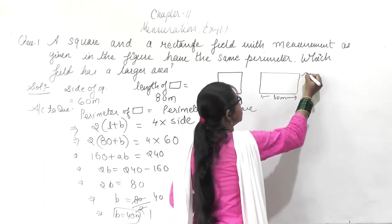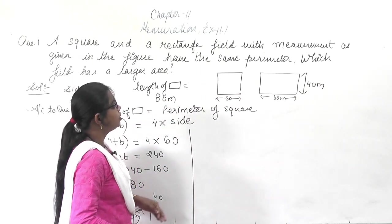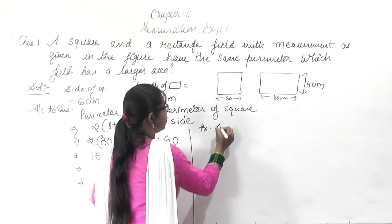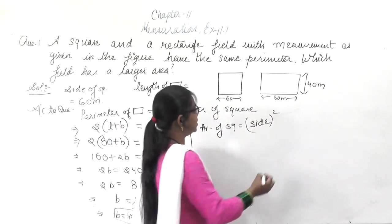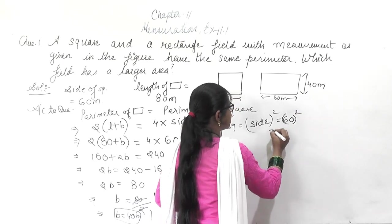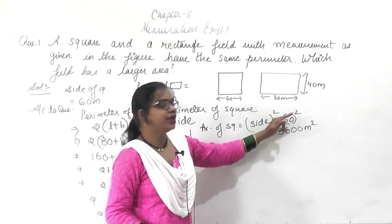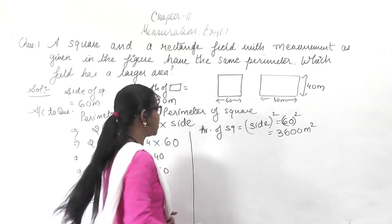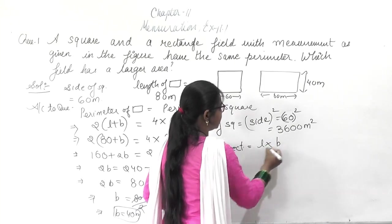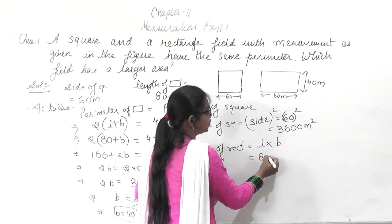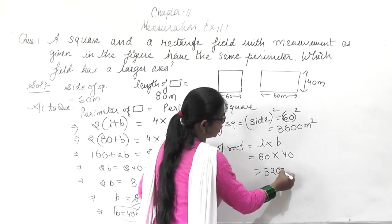We have found out the breadth of the rectangle is 40 meters. Now, the area of the square equals side squared: 60 squared equals 3600 meter square. Similarly, the area of the rectangle equals length into breadth, that is 80 into 40, which gives 3200 meter square.